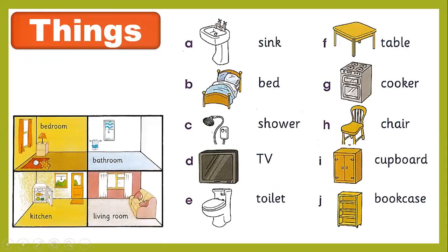Then we discussed how to put the things in these four rooms. For this you have to listen to the short track about where to put things. For example: should the bed go in the bathroom, the bedroom, the kitchen, or the living room? You have to decide which room the bed should be in.